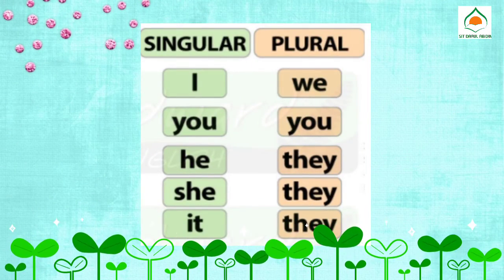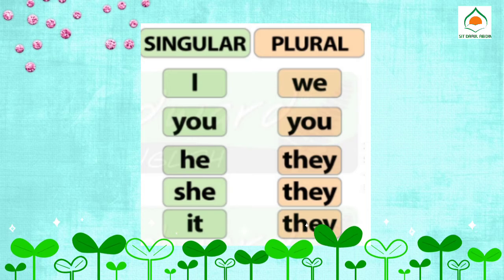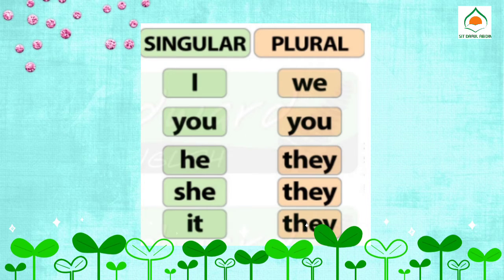For subject pronouns, there are singular subjects and plural subjects. Singular subjects such as: I, you, he, she, it, Maria, Sally, Ahmad. Plural subjects such as: we, you, they, Maria and Sally, you and I, my mom and my brother, and so on.